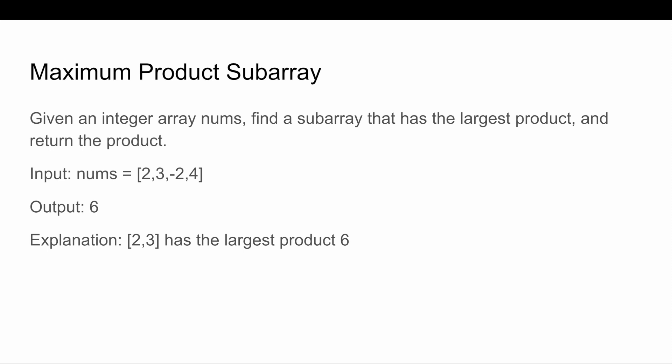The next question is maximum product subarray. The problem is you are given an integer array nums and you have to find the subarray that has the largest product and return the product. Here you can see I've taken input nums where we have 2, 3, -2, and 4, and the output is 6. In the explanation I've also given that 2, 3 has the largest product which is 6, so the answer is 6.